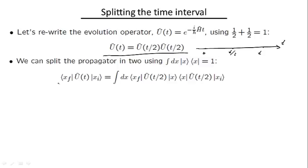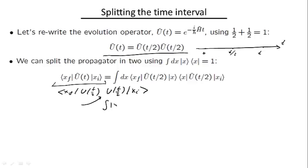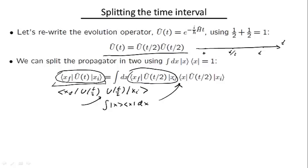Focusing on the actual propagator — the matrix element of the evolution operator between initial point x_i and final point x_f — we can write it as ⟨x_f | U(t/2) U(t/2) | x_i⟩ and insert the resolution of identity in between. Doing so, we get an expression that splits the original propagator into two: one propagator going from x_i to an intermediate point x, and another going from x to the final point x_f.